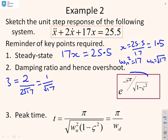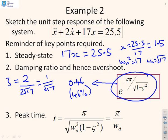Having got ζ, I can now calculate the overshoot using our standard formula. So if I put in that ζ of 1/√17, then what I get is 0.46, or 46%, depending on which way you want to look at it.